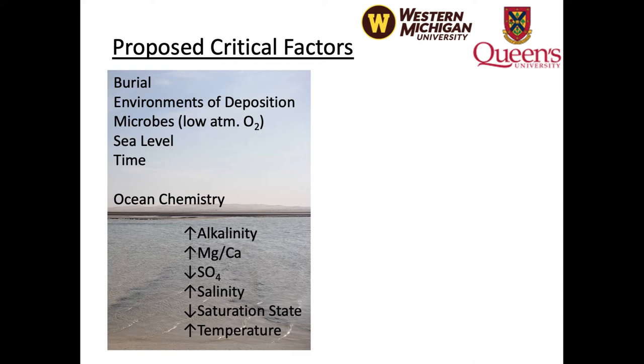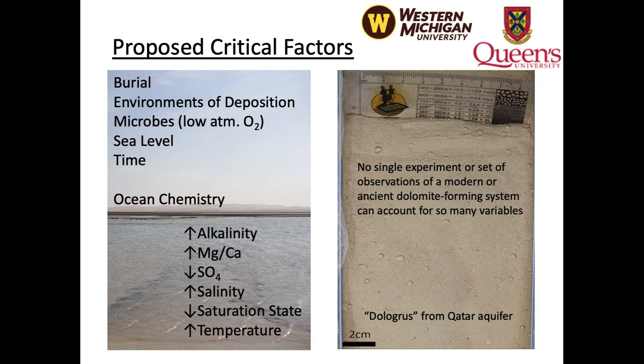Factors of seawater chemistry proposed to promote dolomite formation include elevated alkalinity, elevated magnesium-to-calcium ratios, low sulfate levels, elevated salinity, lower carbonate saturation states, and elevated temperature. Note that the presence of seawater — the only reservoir capable of producing the quantity of magnesium required — is not included as a critical factor, as its presence is assumed in both dolomitizing and non-dolomitizing systems. An integrated study across geologic time from various systems is required to account for all possibilities.